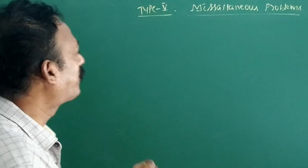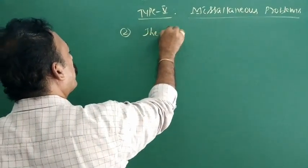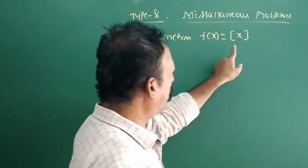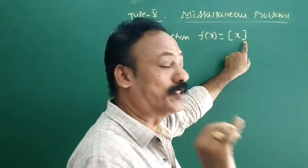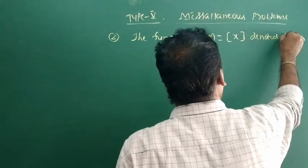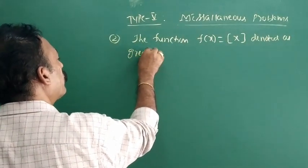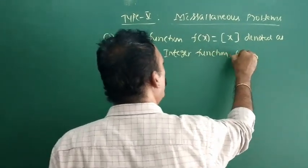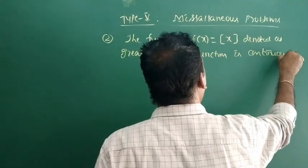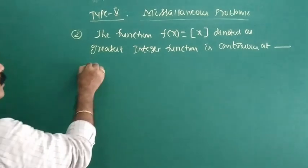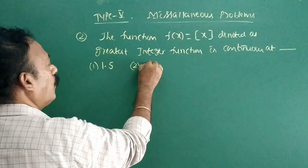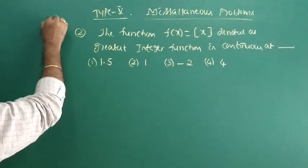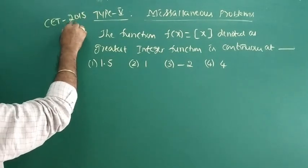The next question: the function f of x is equal to the greatest integer function. We have studied this in first year — the greatest integer function. The question is: at which point is the greatest integer function continuous? The options are: 1.5, 1, minus 2, and 4. This question appeared in CET 2015 and CET 2016.